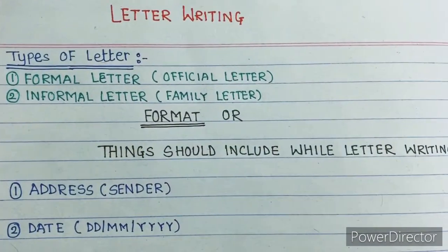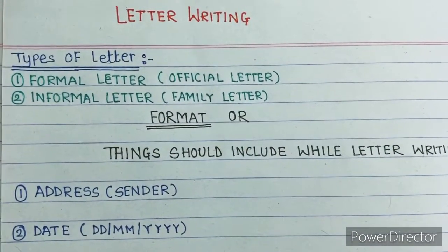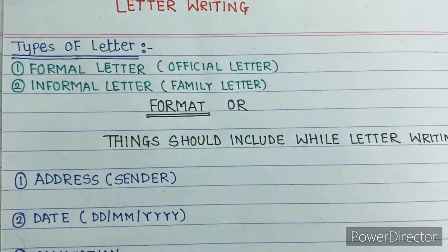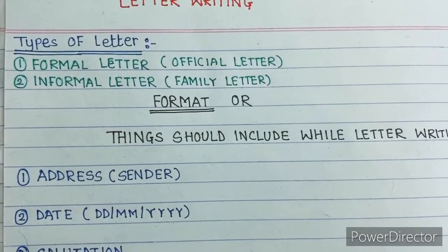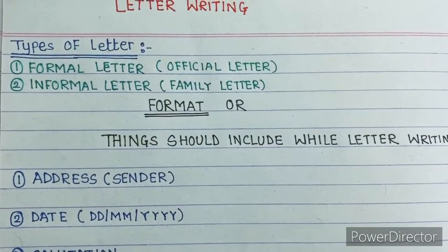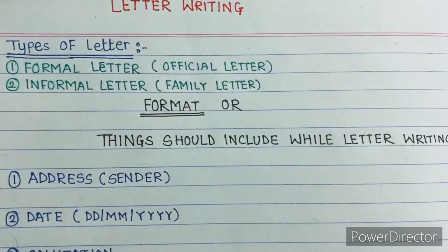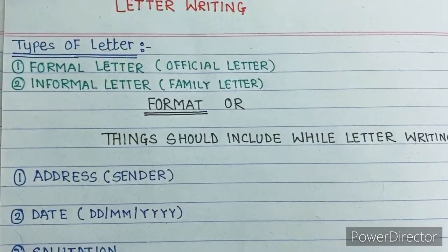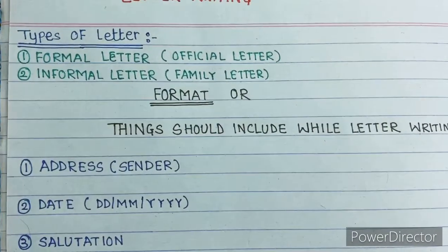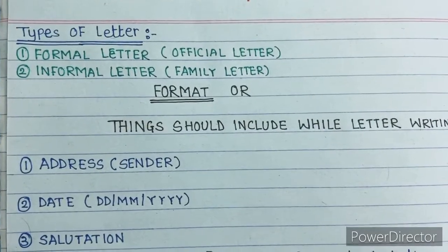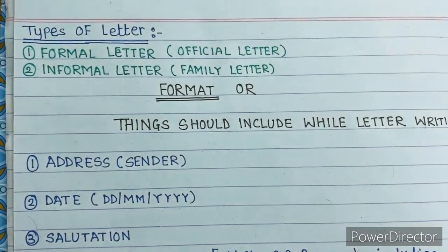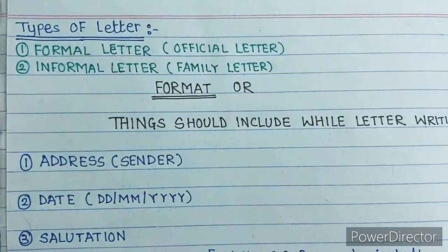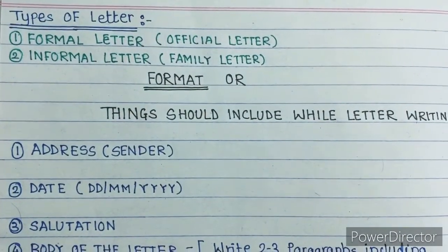Letter writing. The types of letters are two types. First one is formal letters, also known as official letters. Next one is the informal letter, that is the family letter. The names of the letters themselves say what kind of letters they are. Formal means they are totally official. These are letters we receive from officials. It might be any demand, complaint, or official letter like an appointment letter. These all kinds of documents come under formal letters.